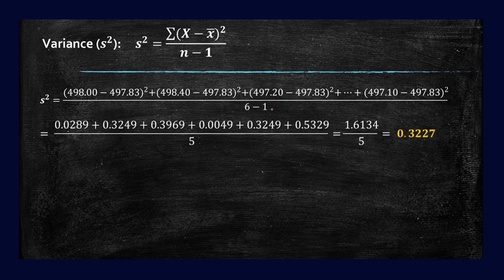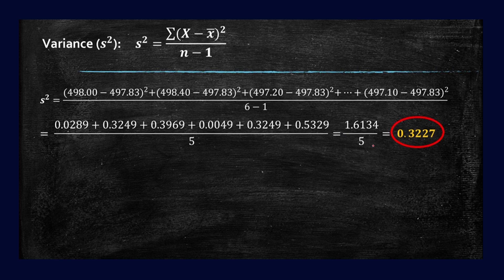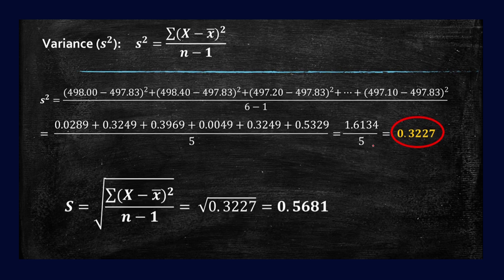So for our numerator, if we solve for that, you can get this square of the difference between the two means. So we can obtain 0.0289, 0.3249, 0.3969, 0.0049, 0.3249, 0.5329. Adding this, we can obtain 1.6134 divided by 5. So therefore, our variance is equal to 0.3227. Now for our standard deviation, just simply square root 0.3227—we'll get standard deviation equal to 0.5681.